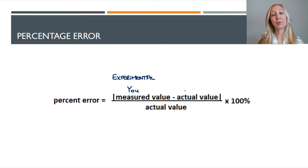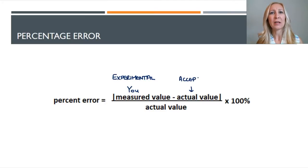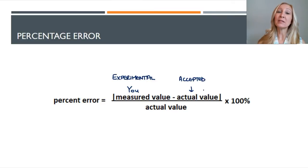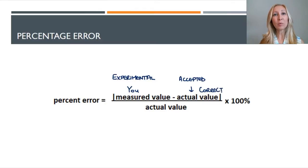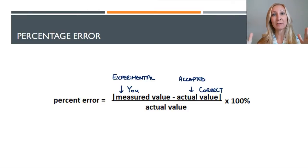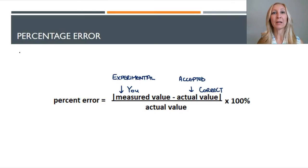The actual value is what is accepted — what should you have gotten when you measured this? Sometimes the accepted value isn't known, so in that situation you'll compare it to an average. This is where you put the accepted or correct value, and you use absolute value symbols because we want a positive percent error. Then you divide by your actual value and multiply by 100% to turn the decimal or fraction into a percentage, and you report this.